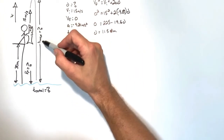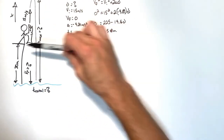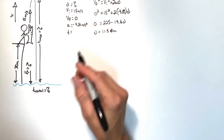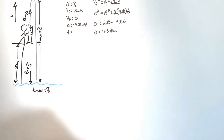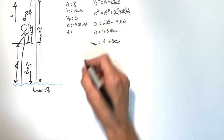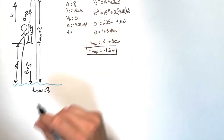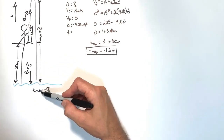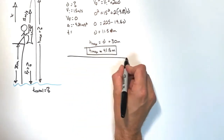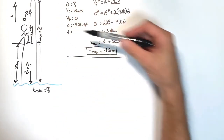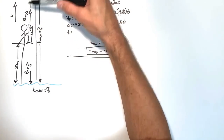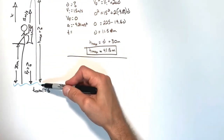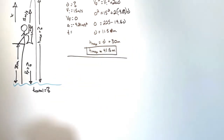Realize that 11.5 meters is not the maximum height above the water — that is the displacement from when the shark is thrown until it reaches its maximum height. To find the maximum height above the water, we need to add these 11.5 meters to the height of the cliff. Now we're going to look at the period of time from when the shark is thrown until it lands in the water. Because this is a different period of time, we need to set up a new set of kinematic variables.